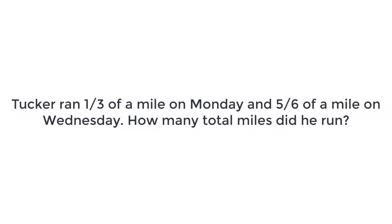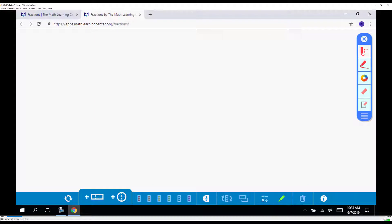Since he ran one-third of a mile on Monday and five-sixths of a mile on Wednesday, to find the total miles that he ran, I will be adding. My equation will be one-third plus five-sixths equals something.